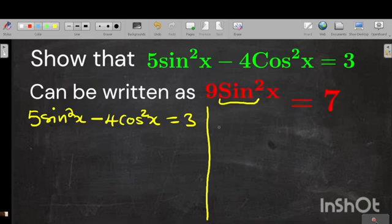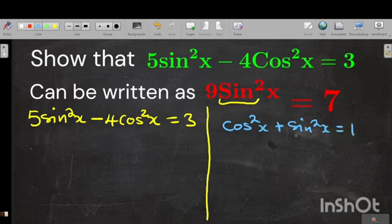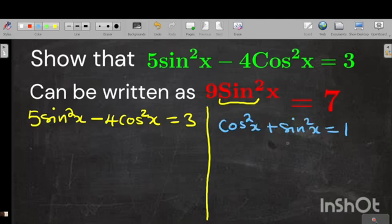Okay, we are going to do that using the identity cos squared x plus sin squared x is equal to 1. This is one of the most useful identities in trigonometry.